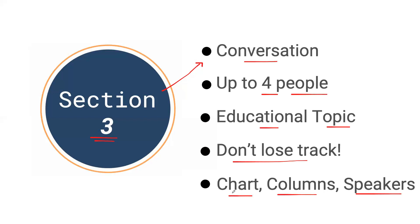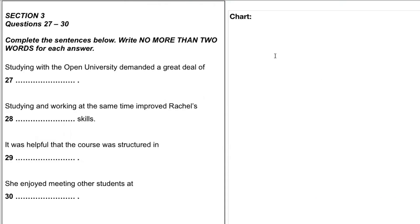You can use my chart today as an example, but I'd encourage you to practice and find what works for you. Let's look at our example. This is section three, questions 27 through 30. We're going to be looking at four sentence completion questions.